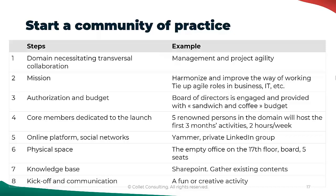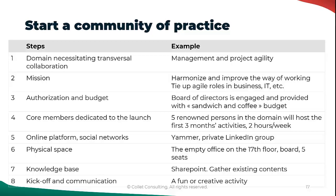Now, how to start a community of practice? Let's briefly look at the checklist in which a few critical points will be discussed. The mission: almost all communities of practice involve the harmonization and improvement of the way of working, sometimes also the tying up of agility to business or IT. The subjects involved are usually transversal such as agility, governance, architecture, etc. Then, of course, authorization and enough budget — we need both to support the communities of practice.